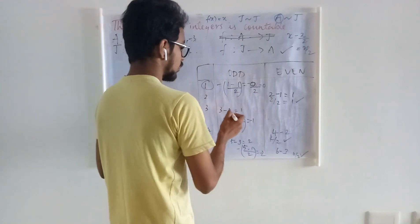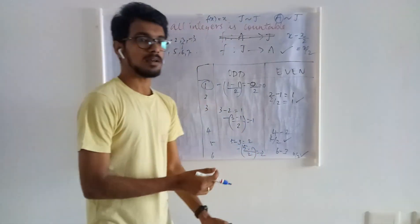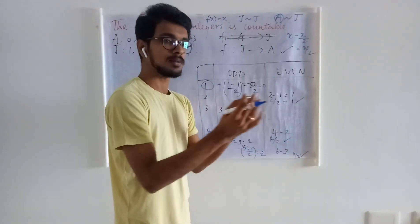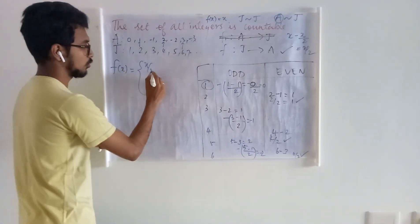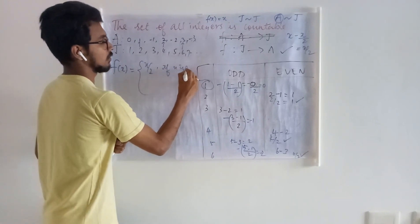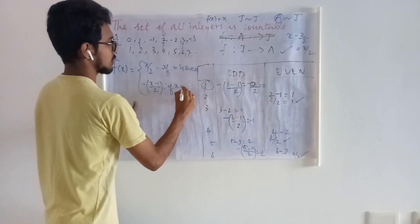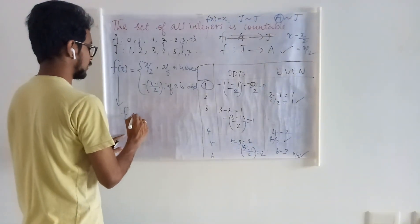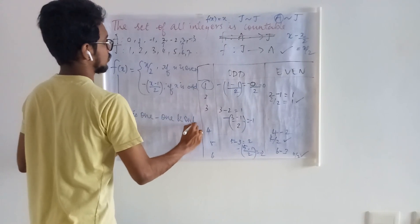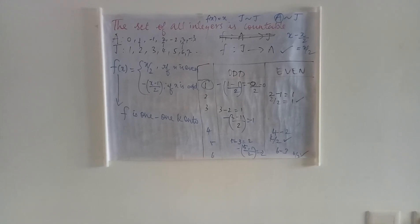So we have found the generalization. The function f: J → A is defined as f(x) = x/2 if x is even, and f(x) = −(x−1)/2 if x is odd. Now you have to prove that this f is one-one and onto. By proving it is one-one and onto, you can conclude that the set of all integers is countable. Please complete this today and submit it in Google Classroom.